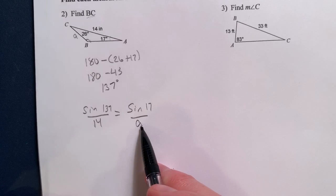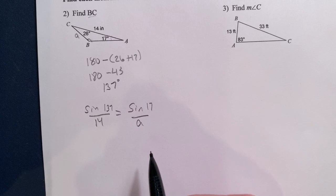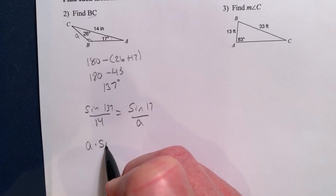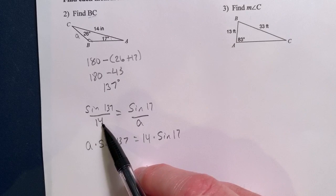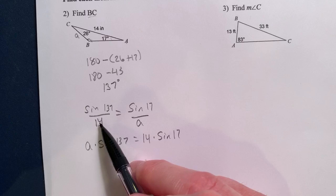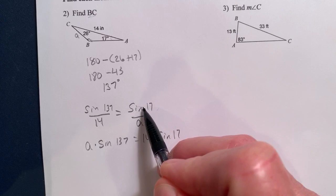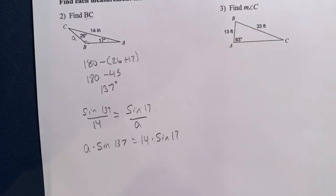This is an example where I can use cross products. So product of the extremes equals the product of the means. So I'm going to write this as A times sine of 137, remember doing cross products, equals 14 times sine of 17. Now understand this, that when I take 14 times sine of 17, this is not the same thing as sine of 17 times 14. This is a constant. This is a coefficient. So multiply the 14 times this. This has a value. Sine of 17 has a value. We're going to take that value times 14, and that's where we're at.